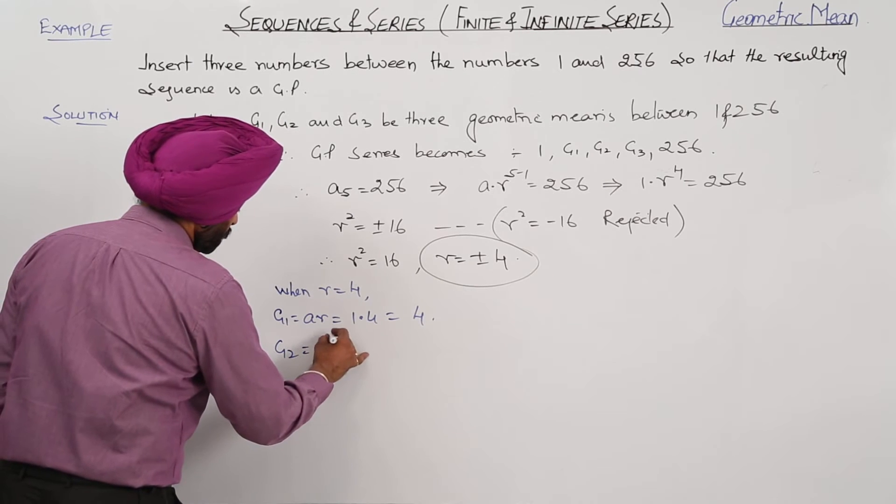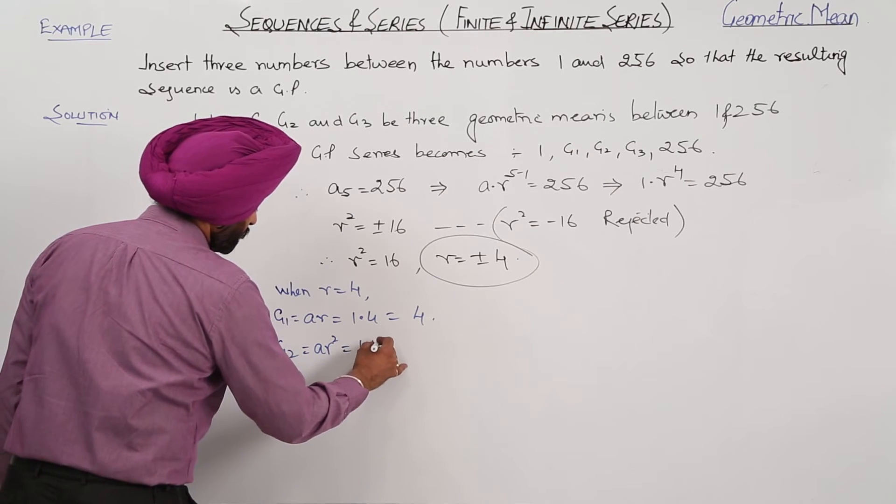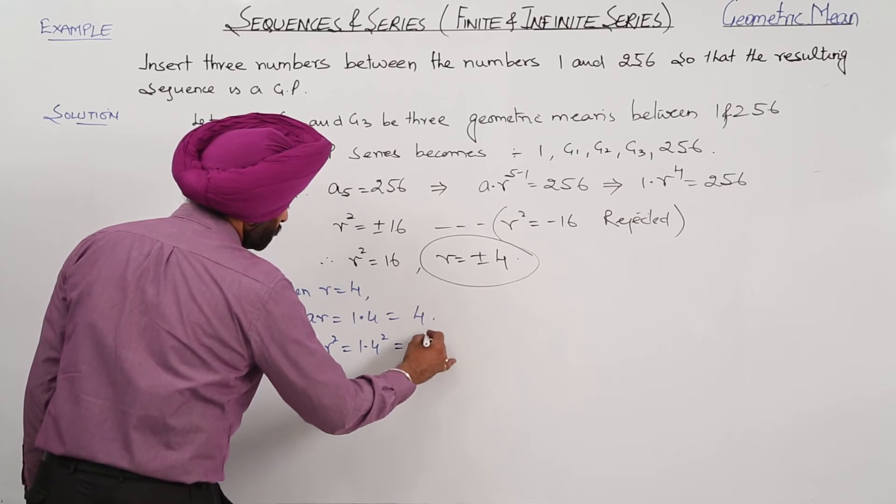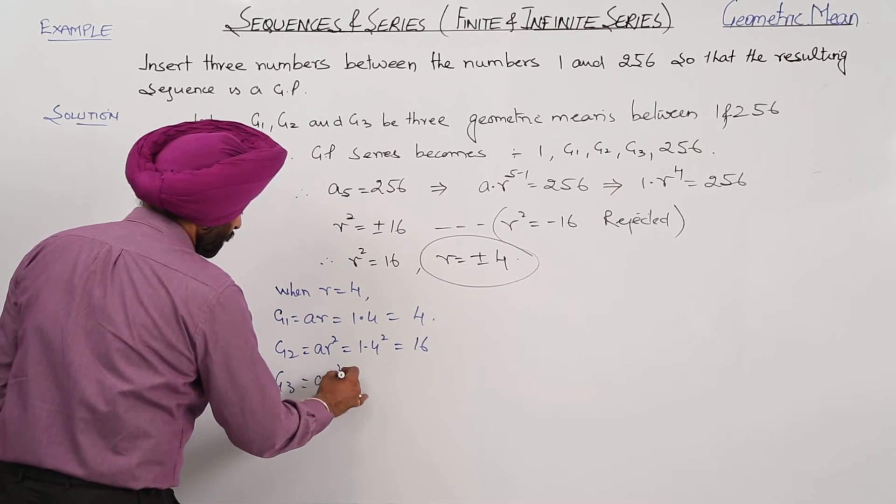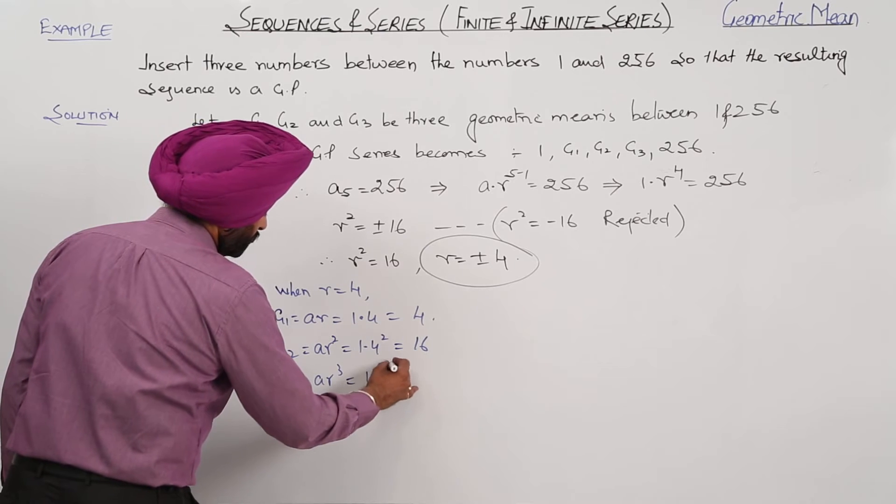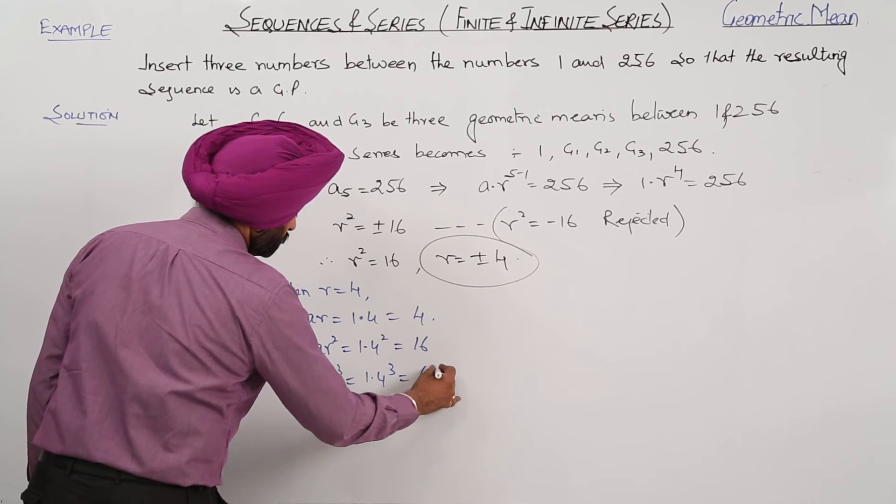So G2 is equal to 1 times 4 squared, this is equal to 16. G3 is equal to AR cubed, this is 1 times 4 cubed is equal to 64.